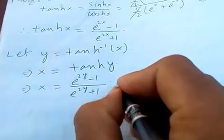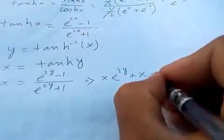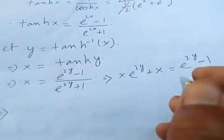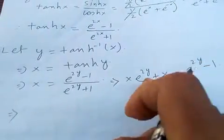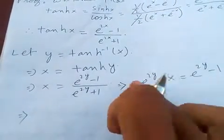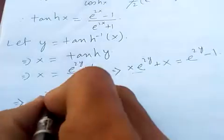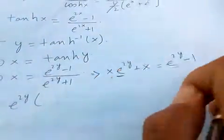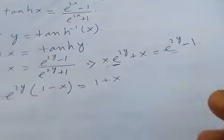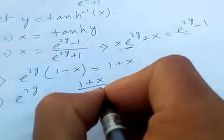Cross multiplying, we get x times e to the 2y plus x equal to e to the power 2y minus 1. Rearranging, e to the 2y times 1 minus x equals 1 plus x, so e to the 2y is equal to 1 plus x over 1 minus x.